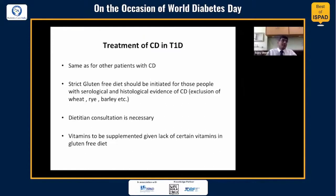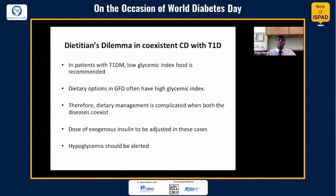Treatment of celiac in type 1 is the same as in isolated celiac disease. A strict gluten-free diet should be initiated for those with serological or histological evidence of celiac, eliminating wheat, rye, and barley from the diet. Dietitian consultation is essential, and vitamins should be supplemented due to deficiencies in a gluten-free diet. Dietitians face challenges because removing gluten-containing foods often leads to replacement with other foods that have a high glycemic index, requiring careful planning. Dietary management is complicated when both conditions coexist, and the dose of exogenous insulin needs to be adjusted with close hypoglycemia monitoring.